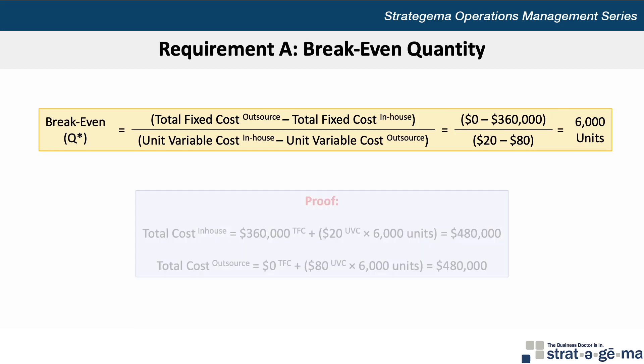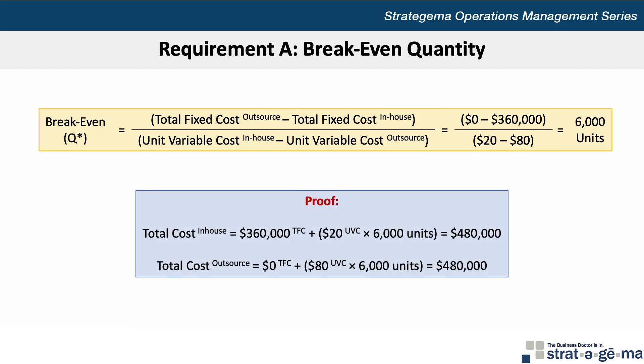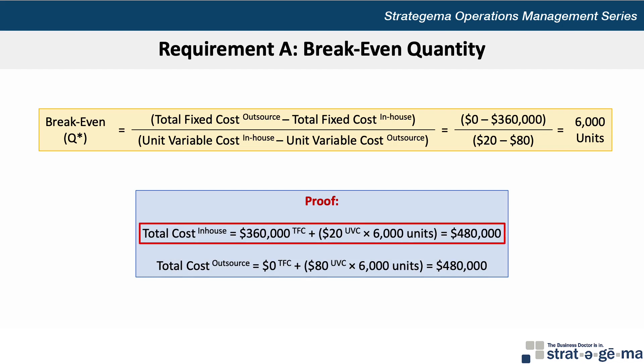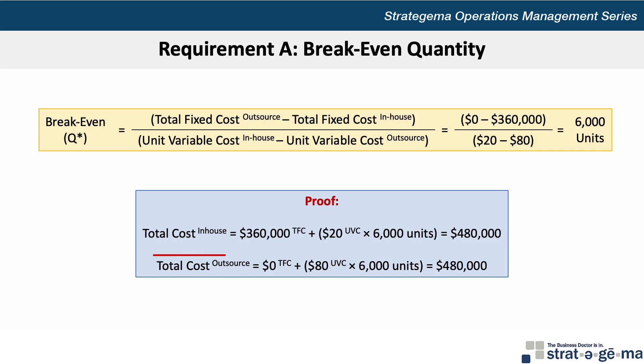We can prove the result by substituting the break-even quantity into a total cost formula for each production option. The total cost of producing 6,000 units in-house is calculated as $360,000 in fixed costs plus $20 per unit in variable costs times 6,000 units, for a total cost of $480,000. For outsourcing, we take 0 fixed costs plus $80 per unit in variable costs times 6,000 units, and the result is also $480,000.